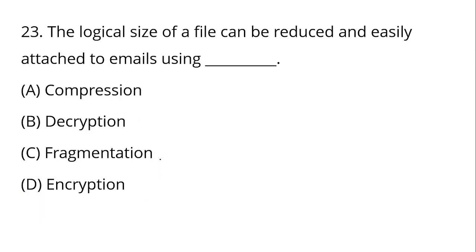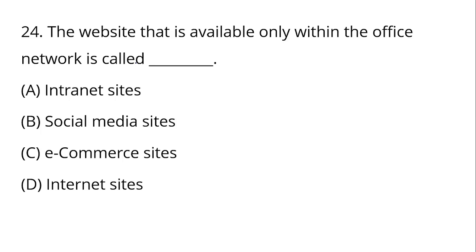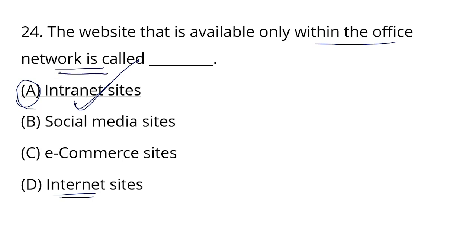The logical size of a file can be reduced and easily attached to email using file compression. Size reduction means the file is compressed. Option A is the right answer. A website that is available only within an office network is called an intranet — it is a private, internal network, distinct from the public internet.